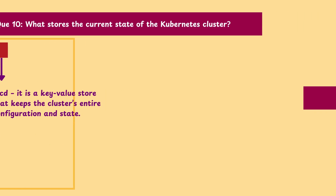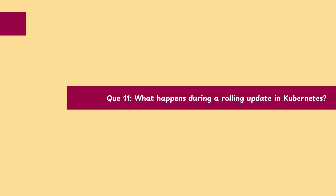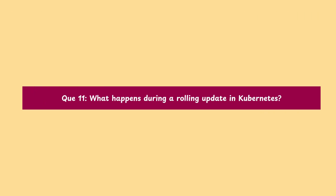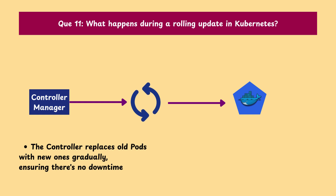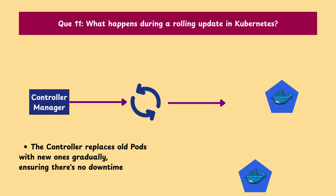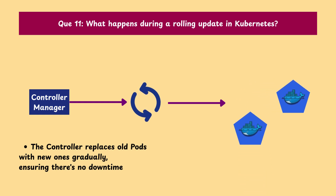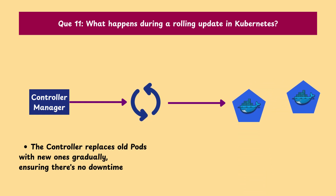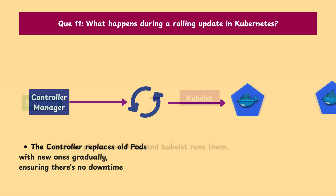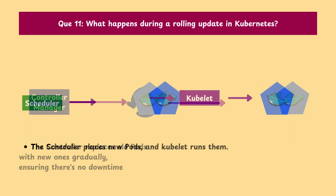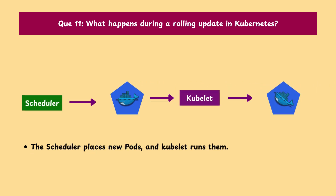Question 11: What happens during a rolling update in Kubernetes? The controller replaces old pods with new ones gradually, ensuring there's no downtime. The scheduler places the new pods and the kubelet runs them.